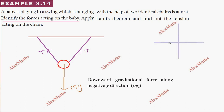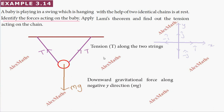We put the x-axis and y-axis, with the unit vector i-cap along x, j-cap along positive y, minus i-cap along negative x, and minus j-cap along negative y. So the downward gravitational force MG acts downward, and there is a tension T along the two strings.